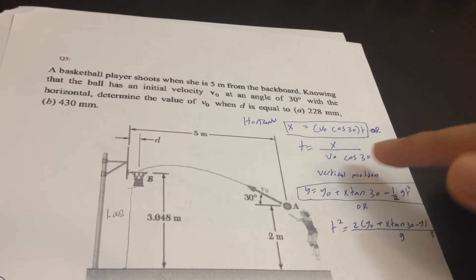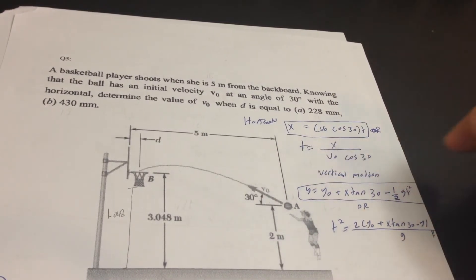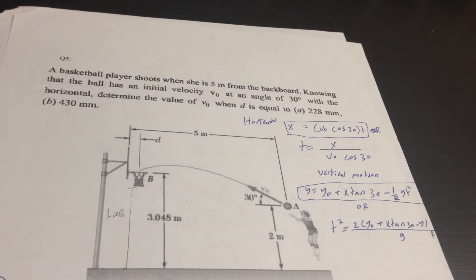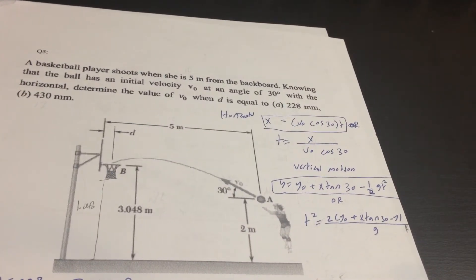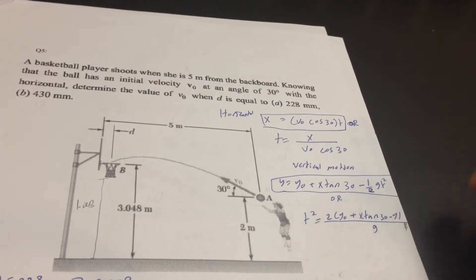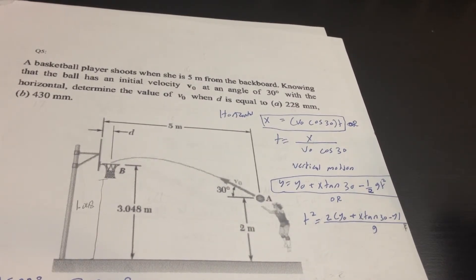And for vertical motion, it's the same idea. We know Y equals Y0 plus V0 sine 30 times T minus 1 over 2 G (which is gravity) times T squared.